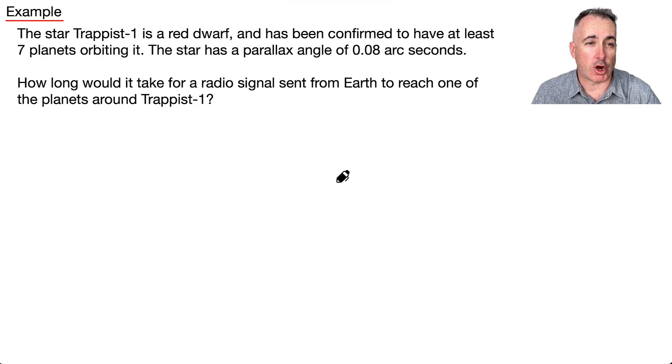We have an example of this. The star Trappist-1 is a red dwarf—this is a real star with real data here. It's been confirmed to have at least seven planets orbiting it, which I think is awesome. This little star has seven planets at least going around it, a little bit like us. This star has a parallax angle—notice how small this is—it's 0.08 arc seconds. The question is: how long would it take for a radio signal sent from Earth to reach one of the planets around Trappist-1?